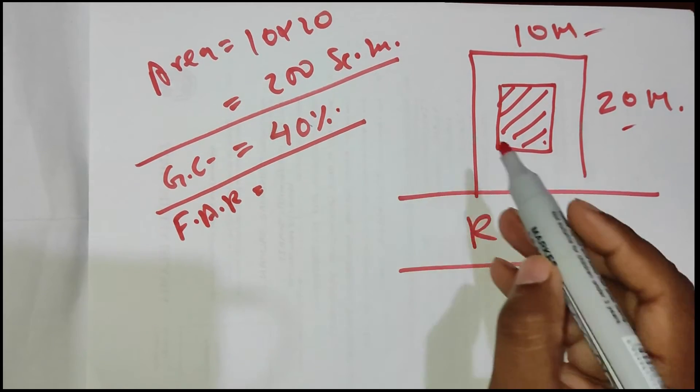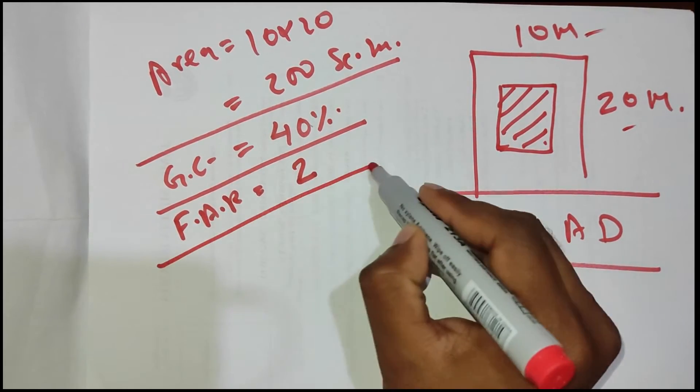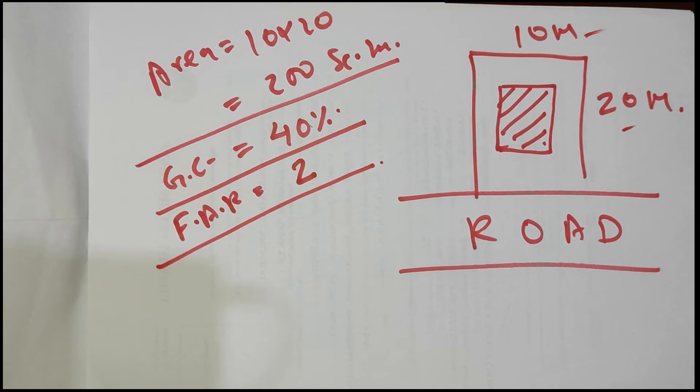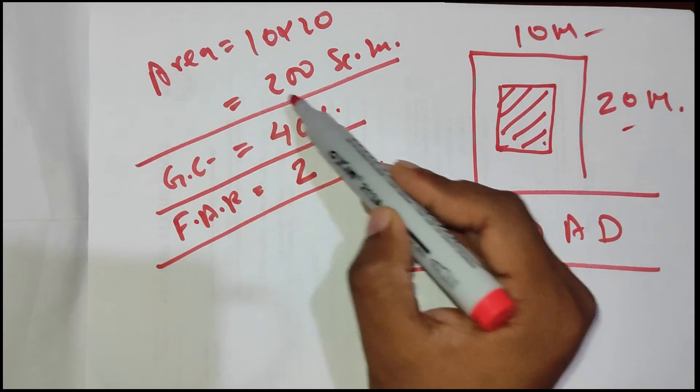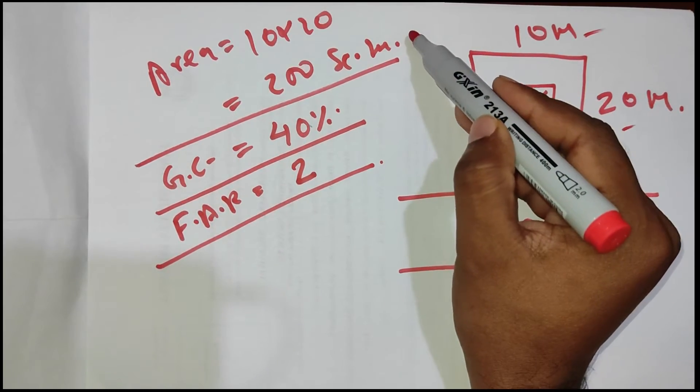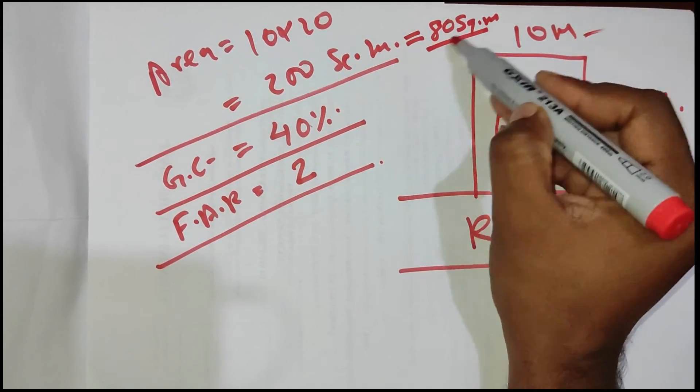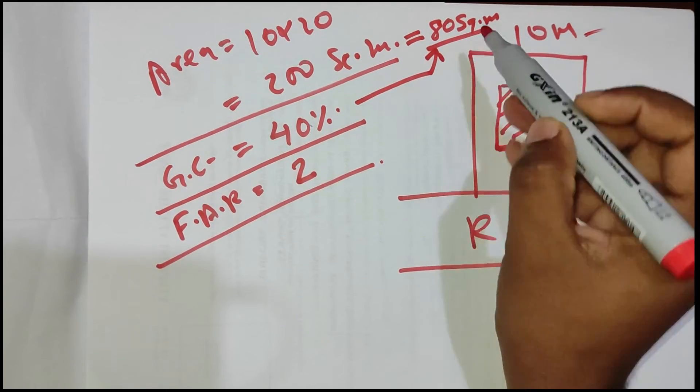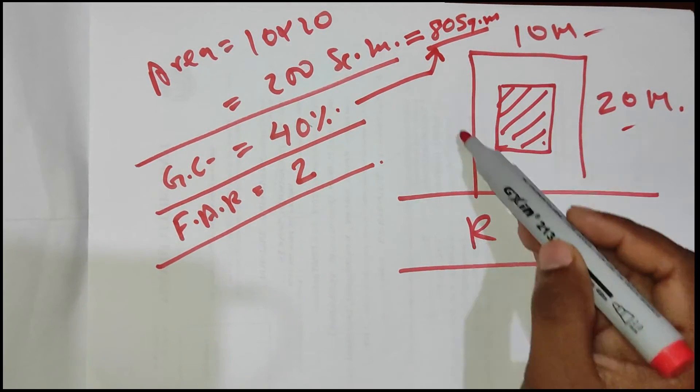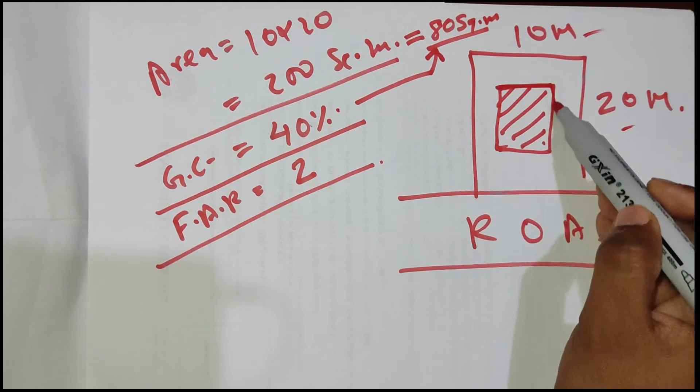In this particular case, let's assume we are considering 2 as FAR. We have the area of the site, which is 200 square meters. The 40 percent of 200 square meters will be 80 square meters. This is the GC.